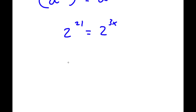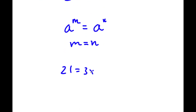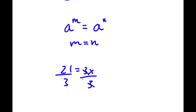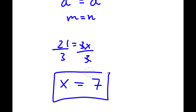Since I have the same base on both sides — a to the power of m equals a to the power of n means m equals n — I get 21 is equal to 3x. Dividing both sides by 3, these cancel out and I'm left with x is equal to 21 divided by 3, which is simply 7. So x equals 7 is my answer.